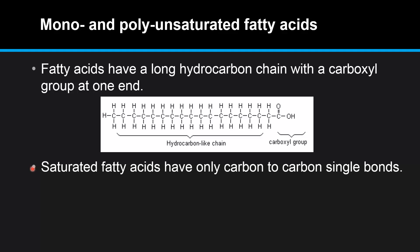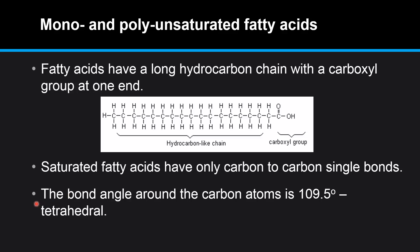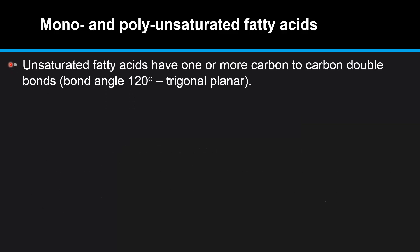Saturated fatty acids have only carbon to carbon single bonds. This fatty acid has carbon to carbon single bonds, therefore it's a saturated fatty acid. The bond angle around the carbon atoms is 109.5 degrees, which has a tetrahedral shape. Unsaturated fatty acids have one or more carbon to carbon double bonds, and the bond angle around the carbon to carbon double bond will be 120 degrees, which is trigonal planar.